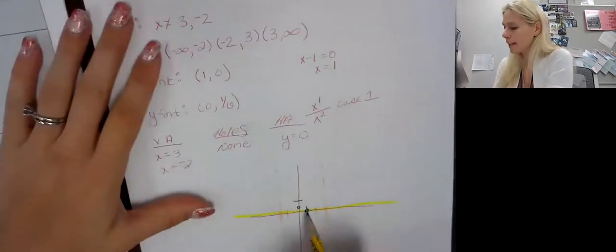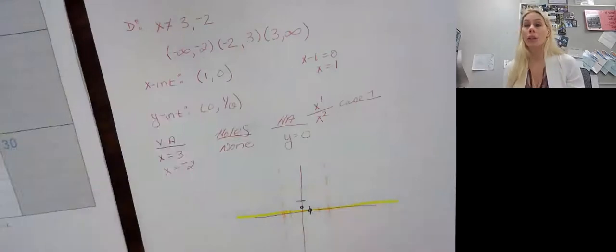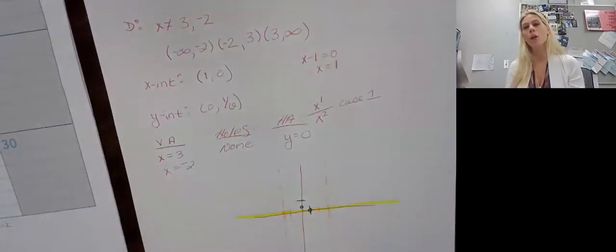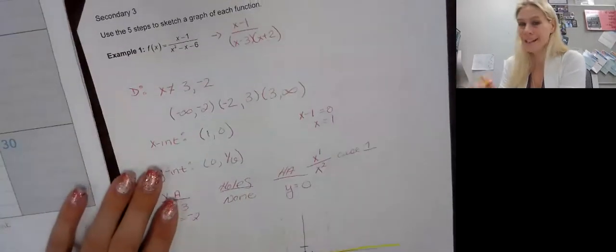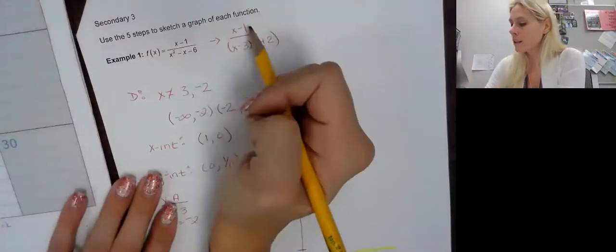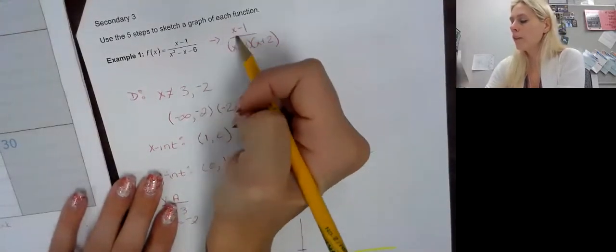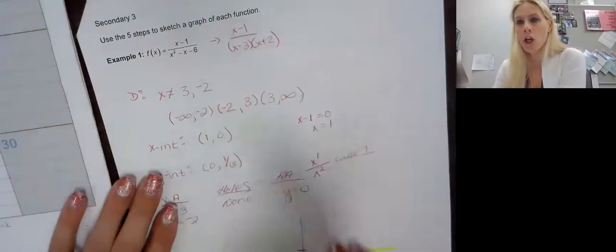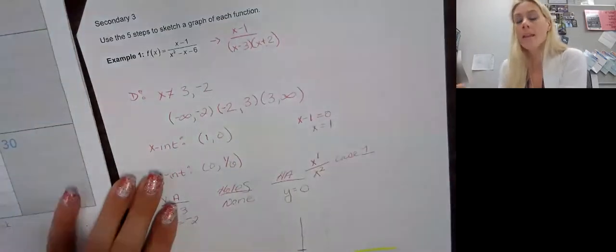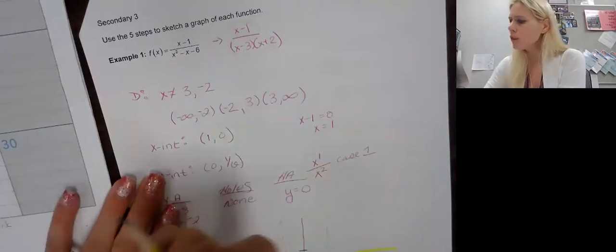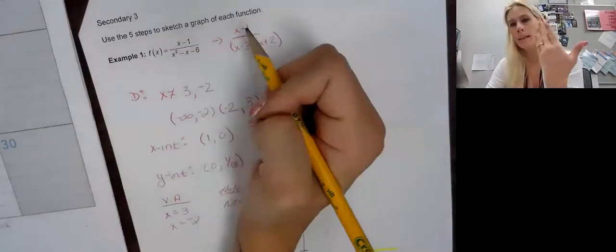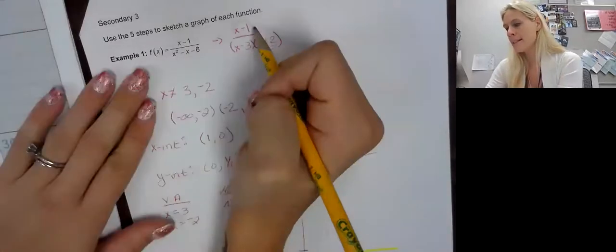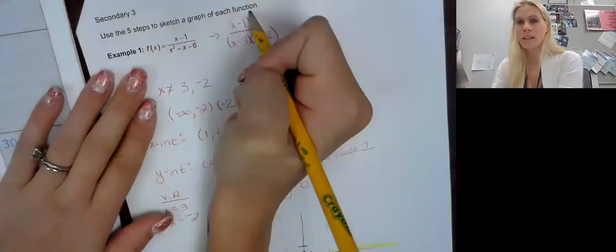The first thing I would do is start with the middle. Now we learned earlier in the year when it came to x-intercepts that they were even or odd. If you remember, odd ones cross, even ones touch, and we knew that based on whether the x-intercept was to the first, second, third, and so on. That's what made it even or odd.